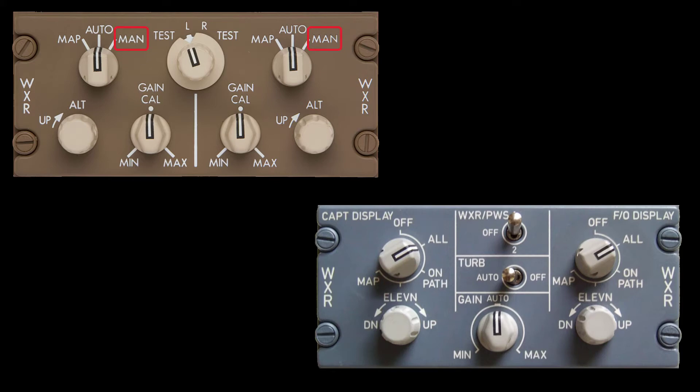On the Boeing panel, you would select man or manual analysis mode and then use the out knob to select the altitude slices. On the Airbus panel, you select ELEVN for elevation mode and use the elevation knob to select altitude slices.